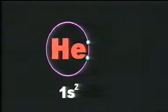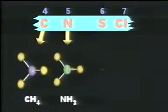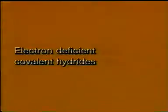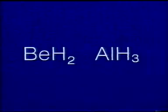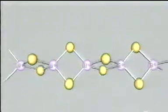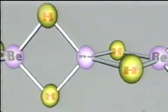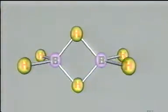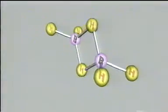In covalent hydrides, hydrogen shows its tendency to acquire the stable electronic configuration of helium by electron sharing. They are formed by the elements in groups 4, 5, 6 and 7 in the periodic table. There are also compounds which fall between ionic and covalent hydrides; typical examples are beryllium hydride and aluminum hydride. Beryllium hydride has a polymeric structure where each beryllium is surrounded tetrahedrally by 4 hydrogens, and each hydrogen atom bridges 2 beryllium atoms. The simplest boron hydride is B2H6, which has a structure similar to beryllium hydride.